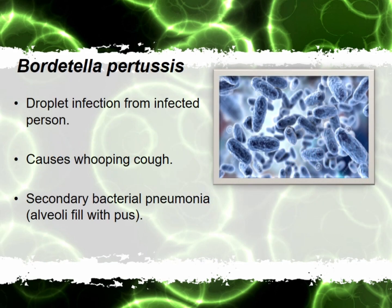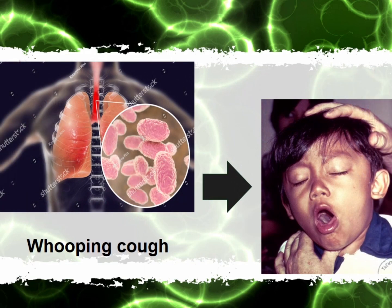This one resides around the air cavity and it spreads when a person carrying this species sneezes or coughs. We can see this round coccus-shaped bacteria in the picture. The symptoms are very painful — it causes whooping cough, and if you do not take proper antibiotics on time under a physician's prescription, this can result in secondary bacterial pneumonia, where your lungs will fill with pus. We can see in the picture how the bacteria is attacking the lung and how the child is doing some whooping cough.